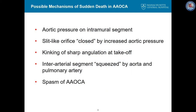There are several suspected mechanisms of sudden death in anomalous aortic origin of the coronary arteries. High pressure in the aorta can exert compression on the intramural segment of the coronary artery, particularly during exercise. Similarly, when there is a slit-like orifice, that orifice may be closed by intra-aortic pressure. In some patients, sharp angulation or kinking of the coronary artery at its takeoff makes it susceptible to changes in aortic pressure and diameter.